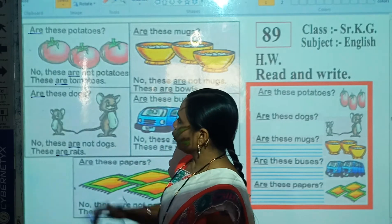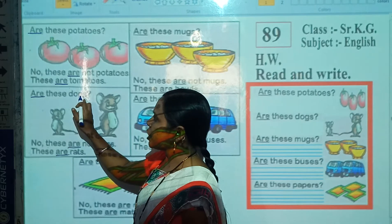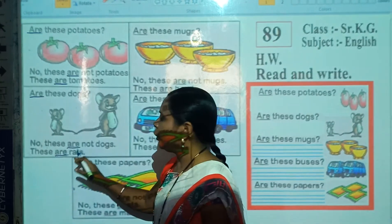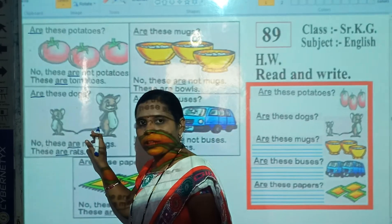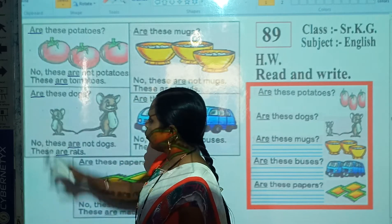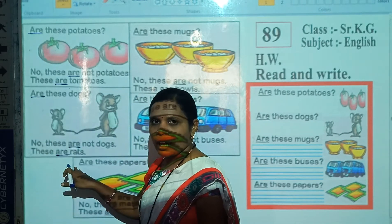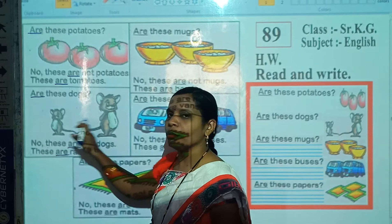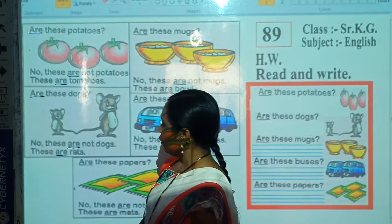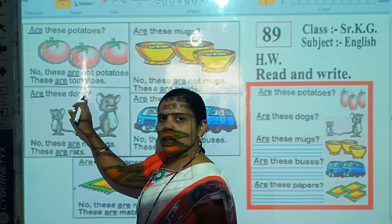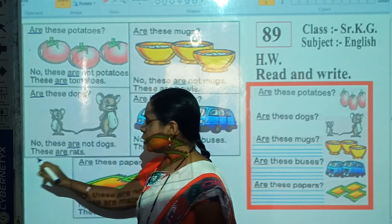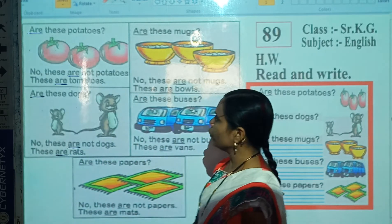Look carefully. When we ask questions about these objects, we use 'are'. And when we reply about these objects, we also use 'are'. Both times we use 'are', because here are more than one object or many objects. Read after me: Are these dogs? No, these are not dogs. These are rats.